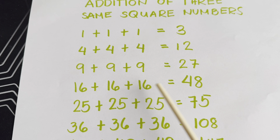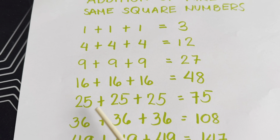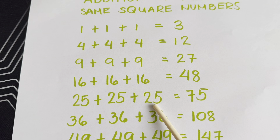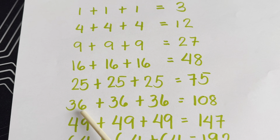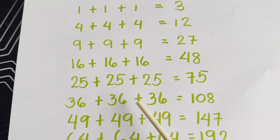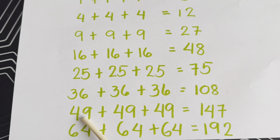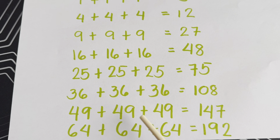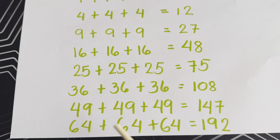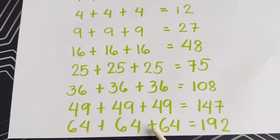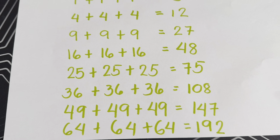16 plus 16 plus 16 is equals to 48. 25 plus 25 plus 25 is equals to 75. 36 plus 36 plus 36 is equals to 108. 49 plus 49 plus 49 is equals to 147. 64 plus 64 plus 64 is equals to 192.